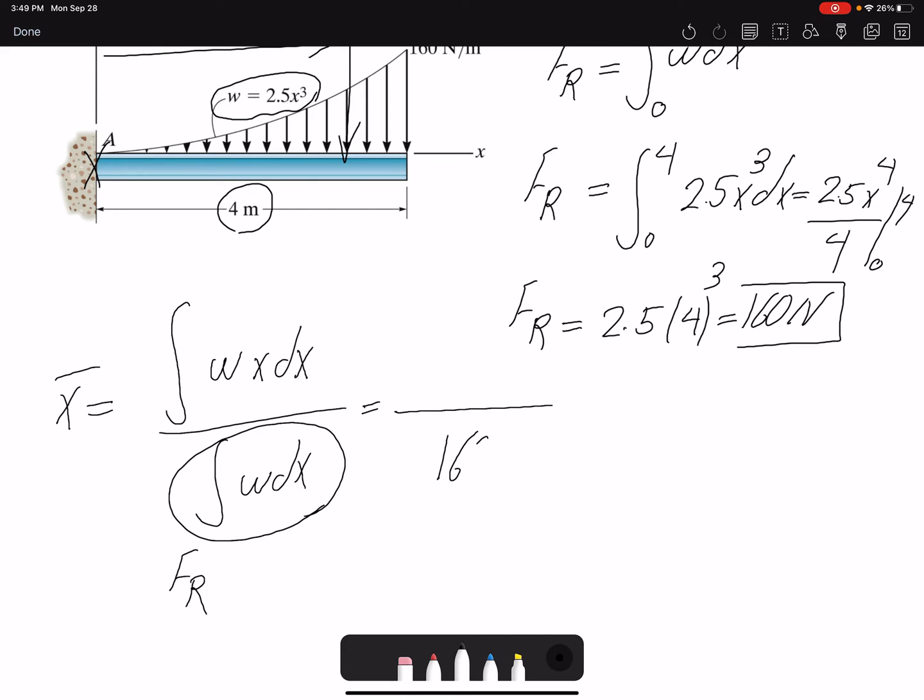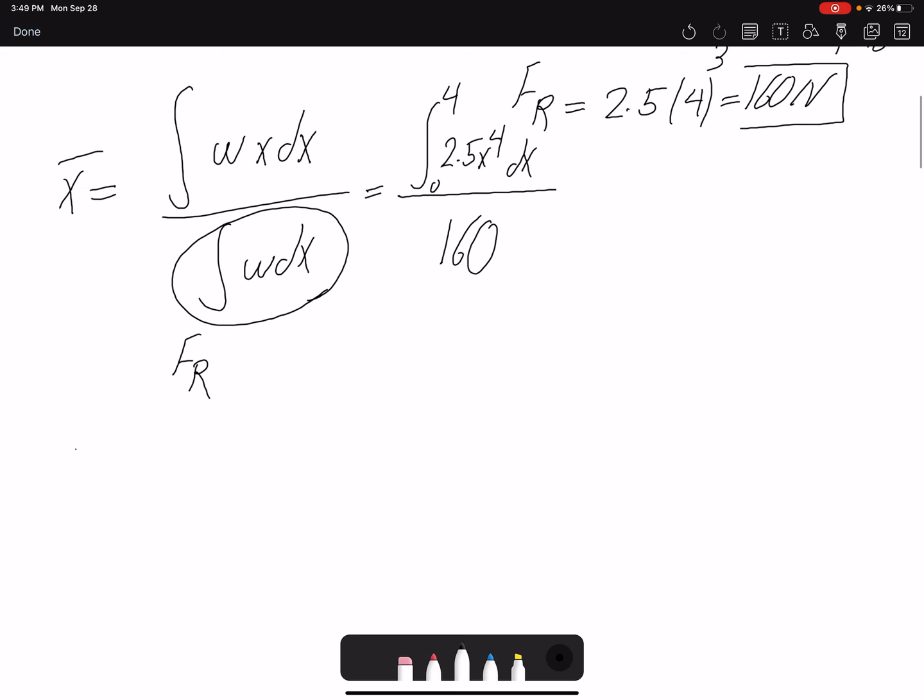W times x: w is 2.5x³ times x, so that would be x to the fourth, from 0 to 4, dx. So if I write it here, x bar would be...